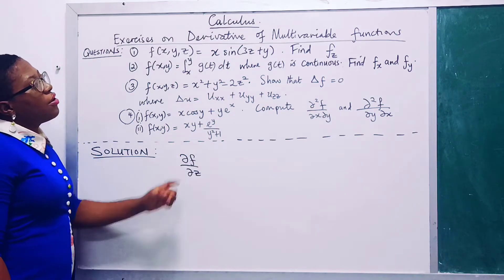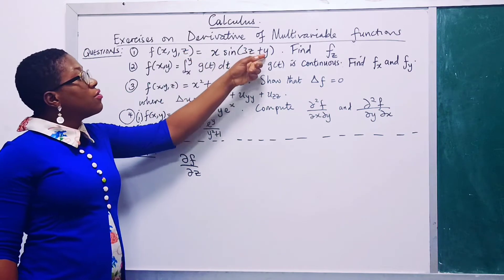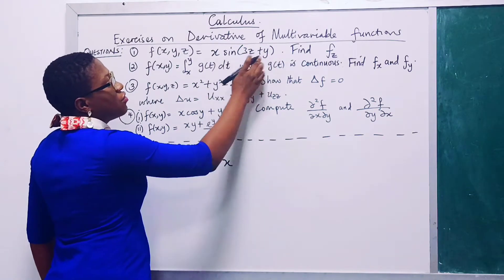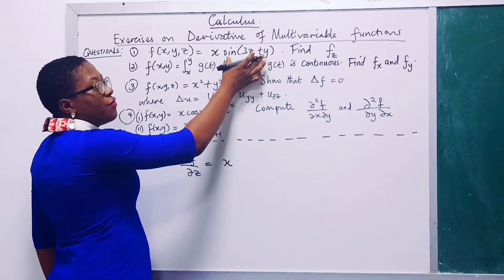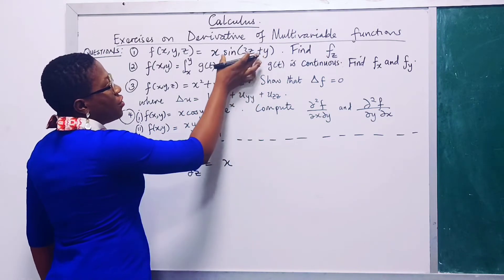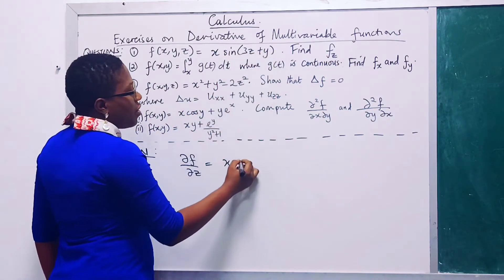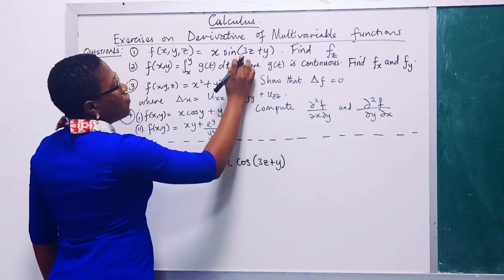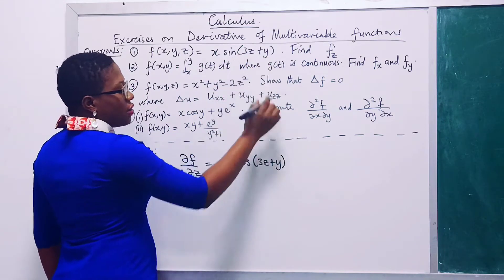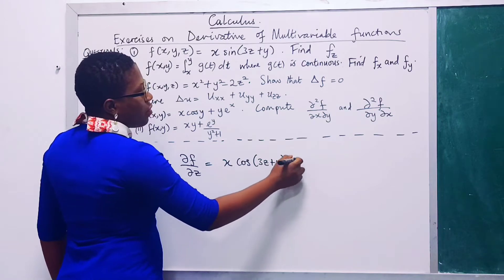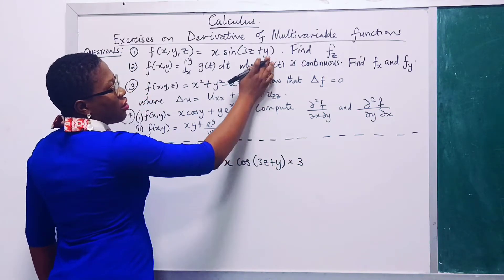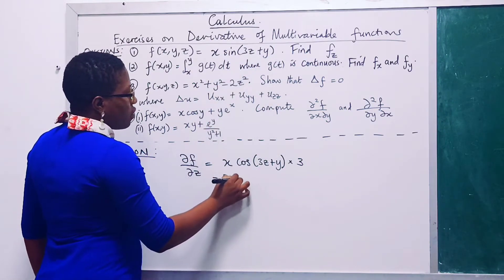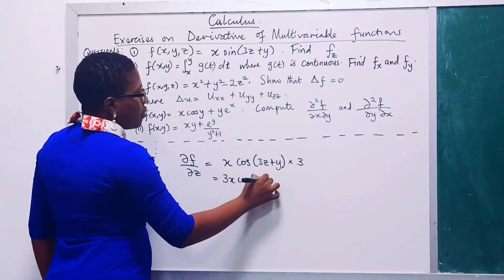We are differentiating partially with respect to z, so we treat every other variable as a constant — x and y are constants. So this is just x. Then we differentiate sin(3z+y) with respect to z using the chain rule: we get cos(3z+y), then multiply by the derivative of the inside with respect to z, which is 3. So the answer is 3x·cos(3z+y).